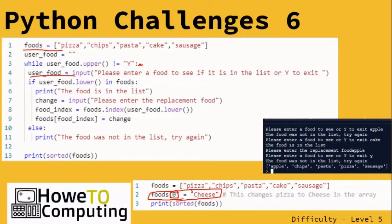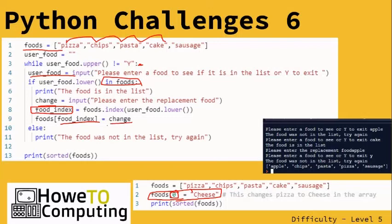It's going to check to see if the input is in the food array. If it is in the food, great — it's going to confirm it's there. Then it's going to ask what you'd like to change it to, replace it with the user input, grab the food index — which is the number position it's in — and then use that food index to change it to the new user input.